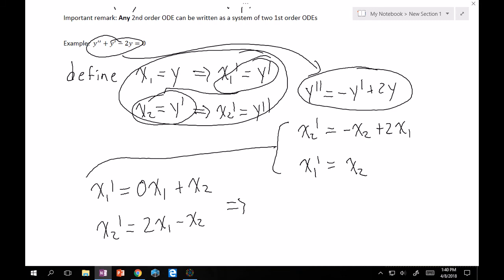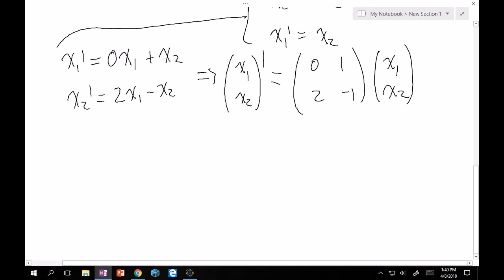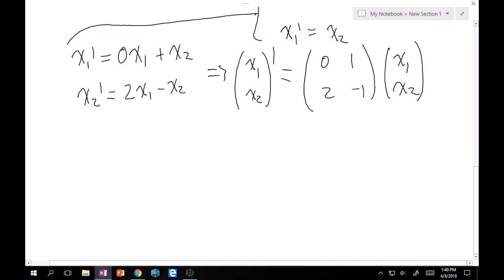So from here, you can just say that x1, x2 prime is equal to 0, 1, 2, minus 1, x1, x2. Good. And so this is our A matrix. This is really what we care about. It's usually assumed that we always have an x vector here and the derivative of the x vector over here. And so to prove this to you, that this works, let's try to find the characteristic equation of this matrix.